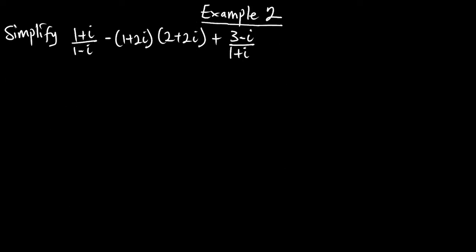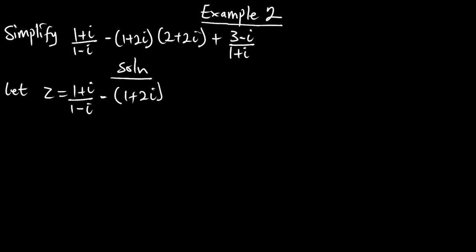Example 2: we are to simplify this expression. There is a division, multiplication, and division involved. We must tackle this carefully. Let everything here be equal to z, so z equals 1 plus i over 1 minus i, minus 1 plus 2i over 2 plus 2i, and so on.